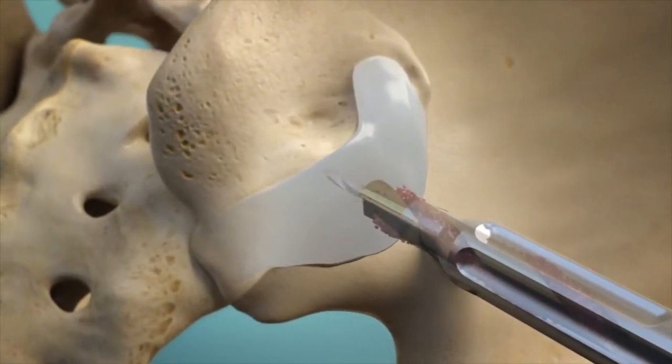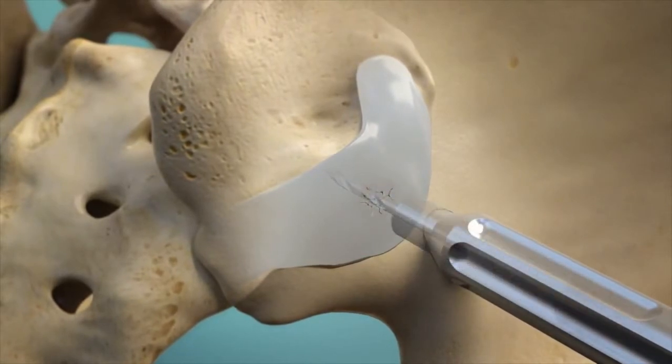After docking the working cannula to maintain position, the drill is removed and the sacral surface is prepared for decortication with a scraper and suction.